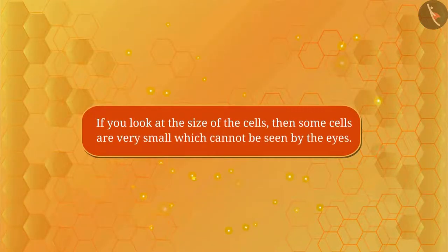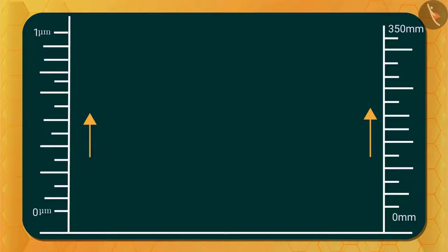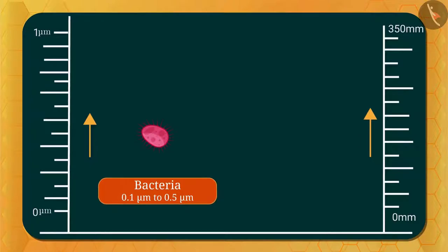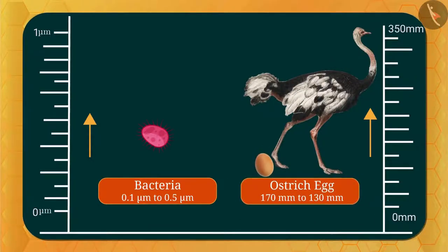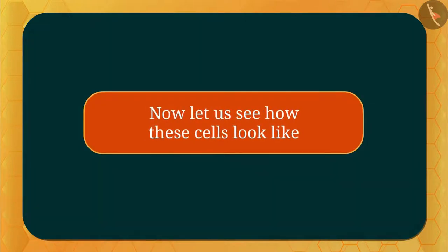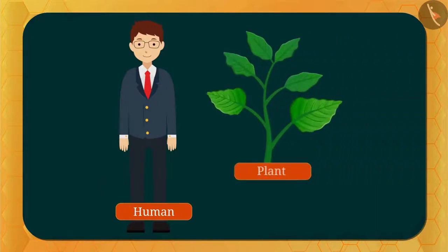If you look at the size of cells, some cells are very small and cannot be seen with the eyes — such as bacteria, which are about 0.1 to 0.5 microns in size. The largest cell is the ostrich egg, with a size of 170 millimeters by 130 millimeters. Did you see how many types of cells are found?